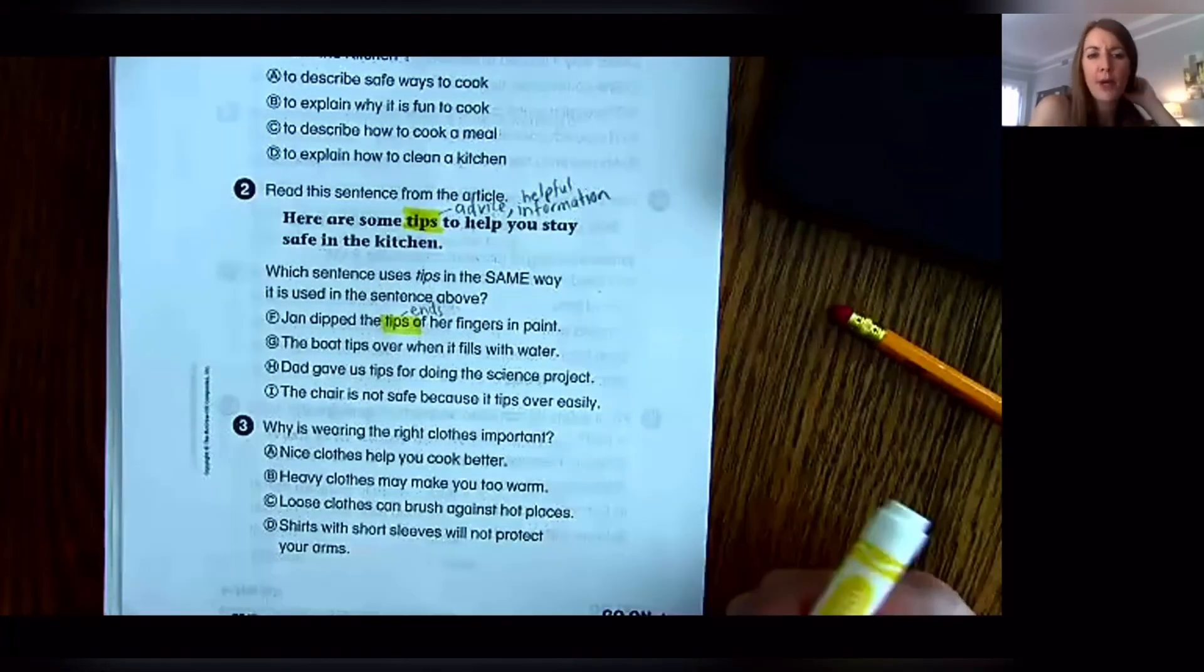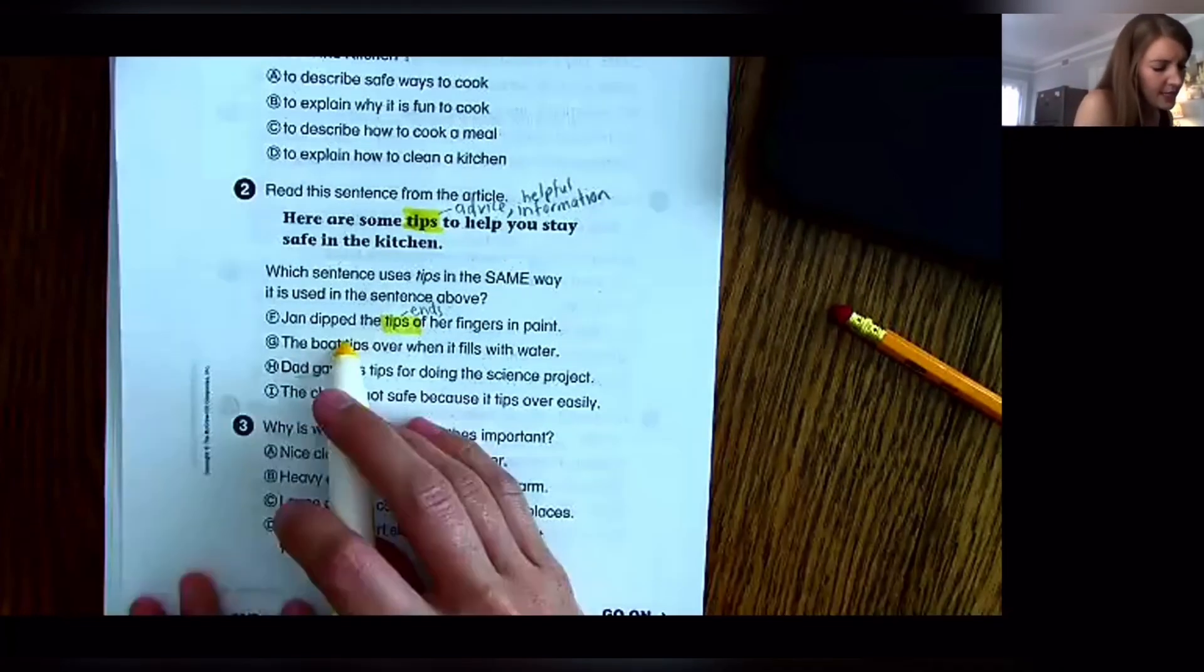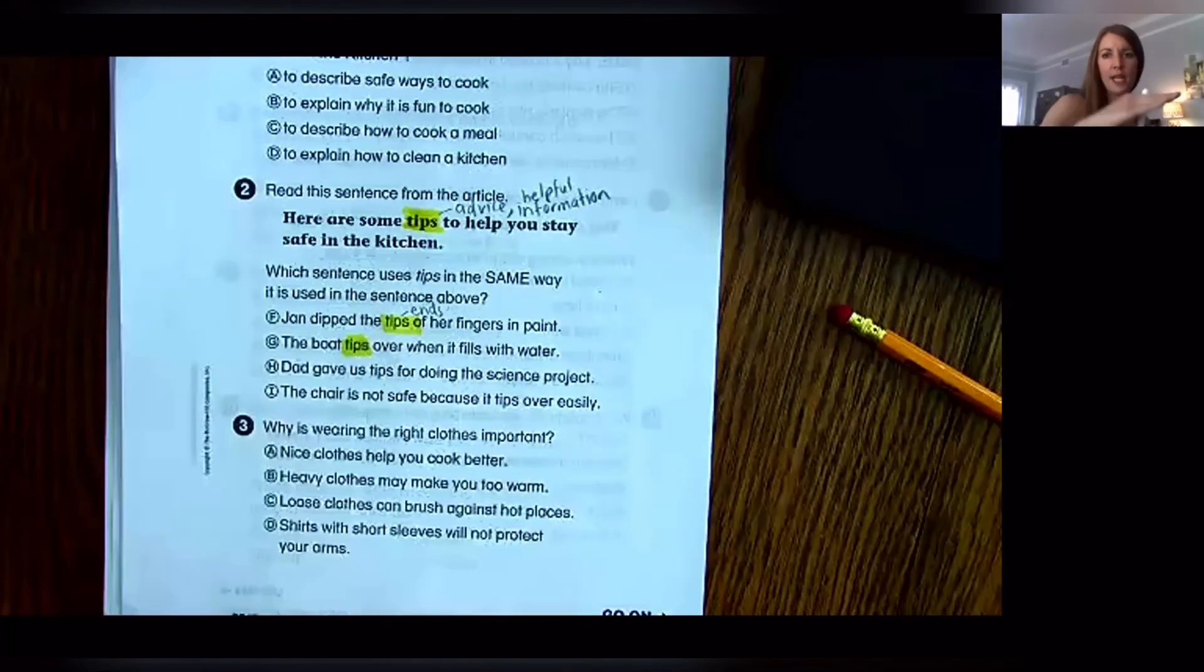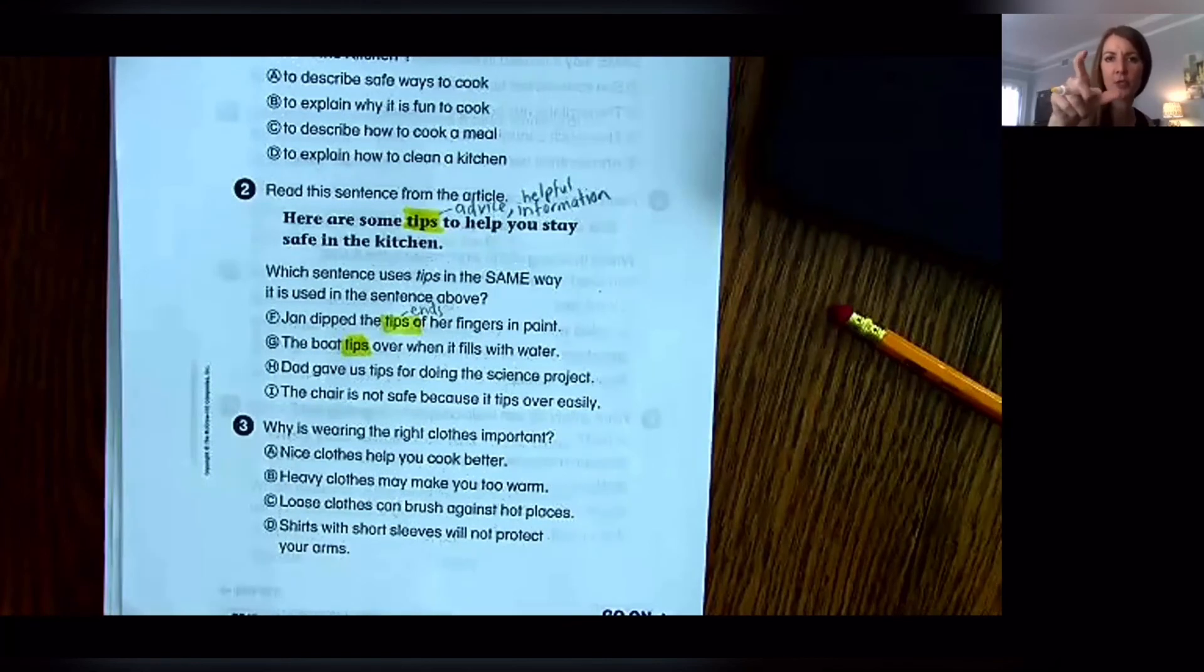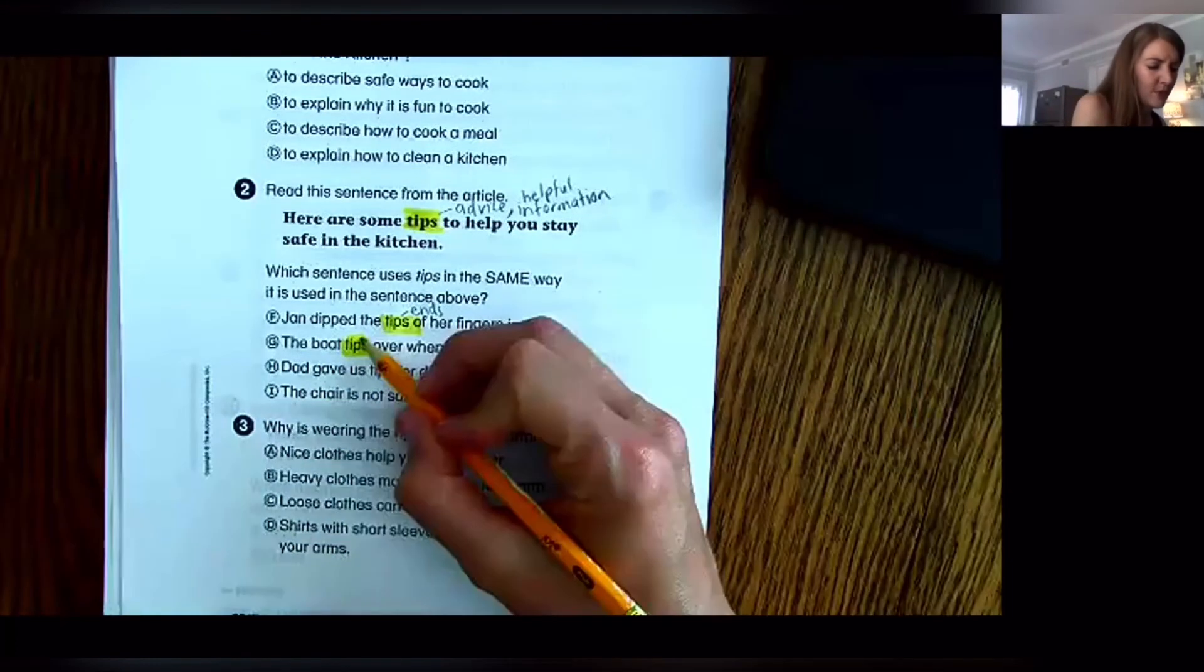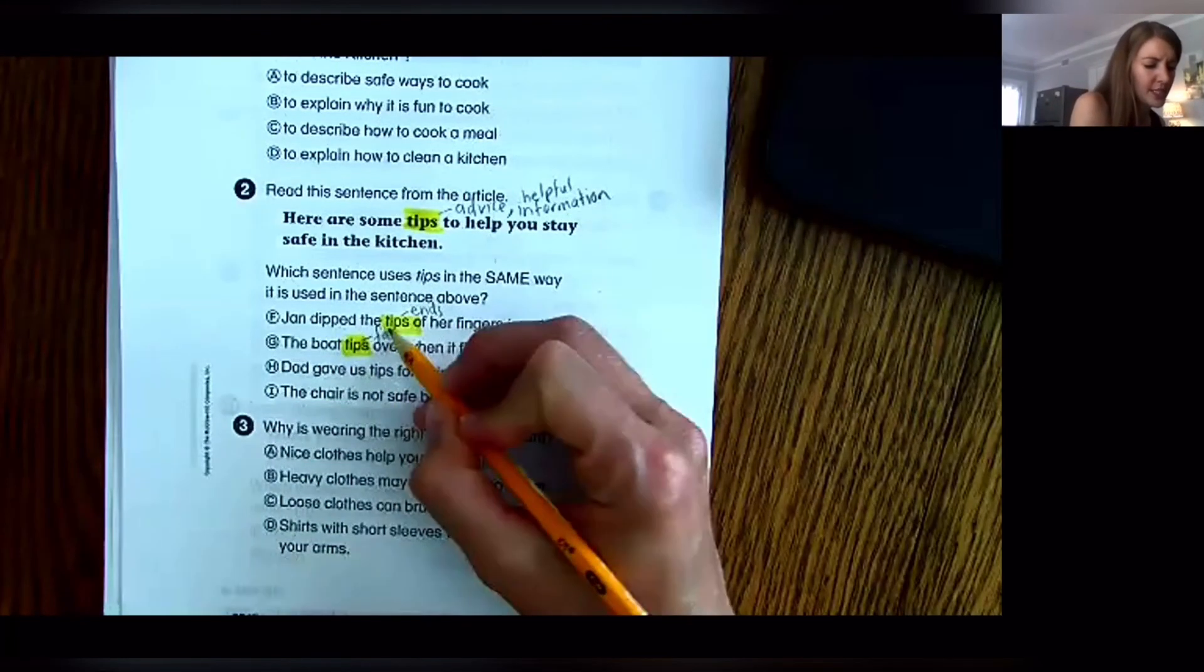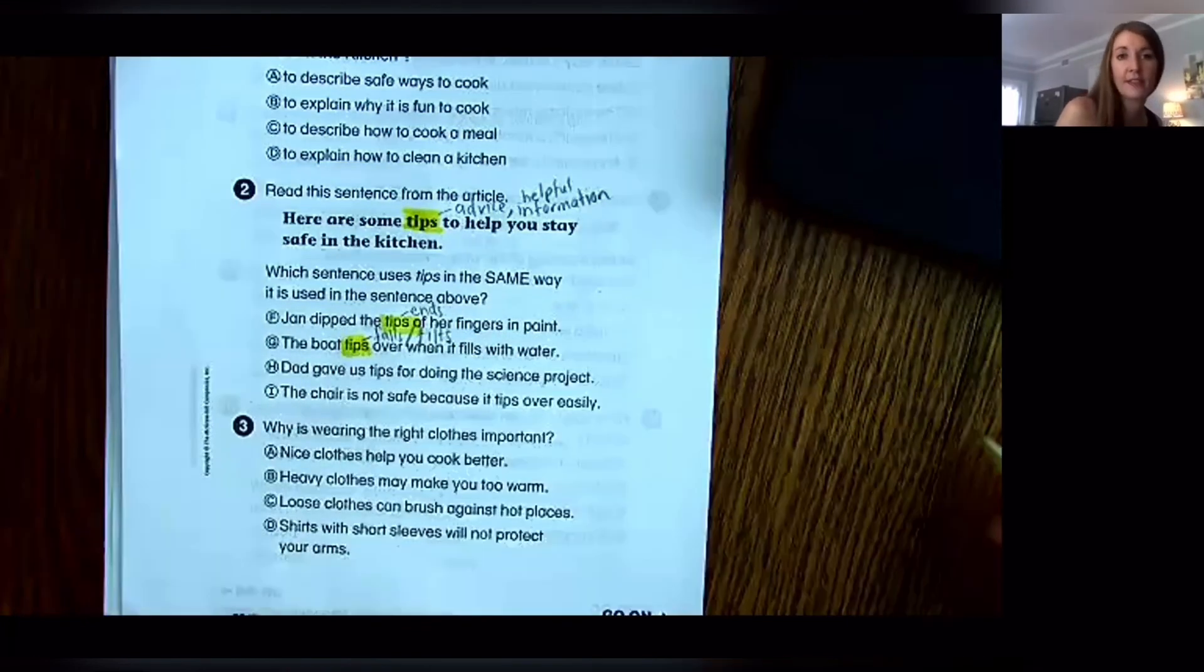G: The boat tips over when it is filled with water. Okay, I'm visualizing a boat, maybe a one in a bathtub, a little play boat. And if you fill it with too much water, it tips over. So that to me means something more like falls over or tilts over, which is not the same as helpful information. The boat helpful information over?